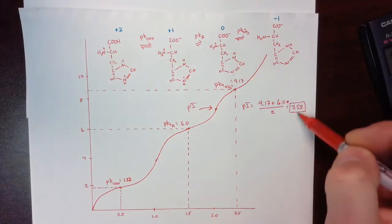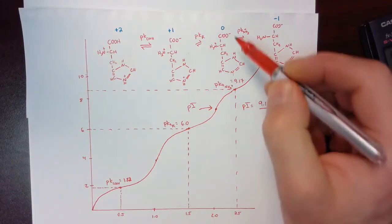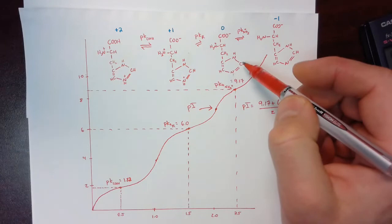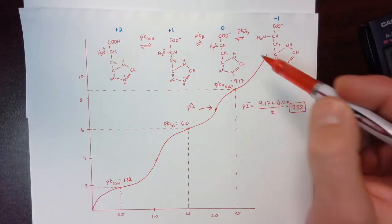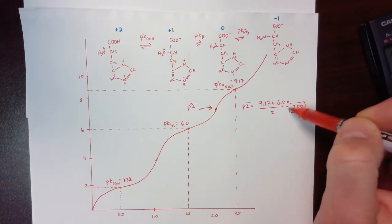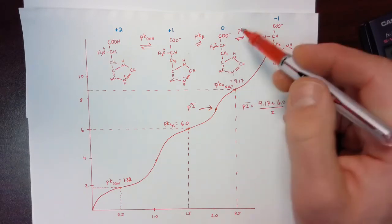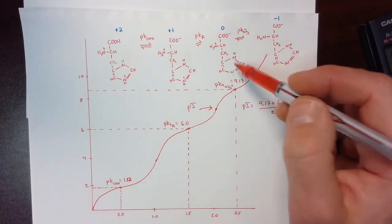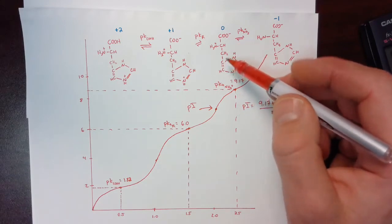Therefore, at a pH of 7.58, histidine will not migrate in an electric field. So if we made up a gel and made it at a pH of 7.5, histidine would not move one way or the other in that electric field.